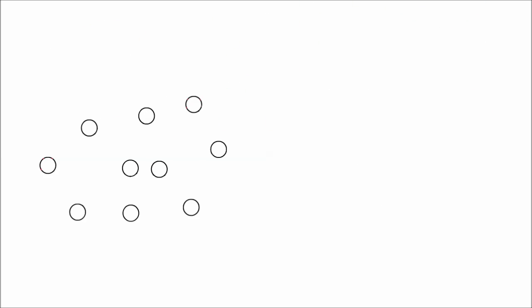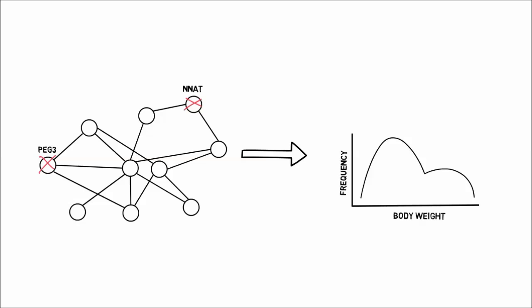Interestingly, what we also found was that deleting other members of the imprinted gene network also triggered a bistable epigenetic obesity on inbred backgrounds. This indicated that the members of the network were acting together, creating something like a switch that flips the DNA output to either lean or obese.